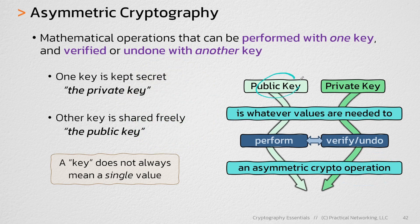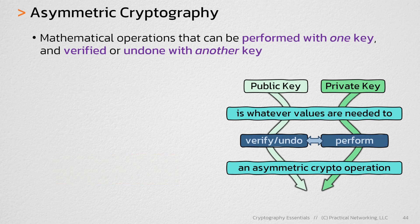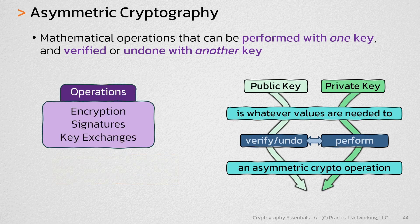Sometimes the public key is performing an operation and other times the public key is verifying the operation — it again comes down to the specific operation that you're doing. With asymmetric cryptography, there are three possible operations that can exist: encryption, signatures, and key exchanges.